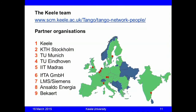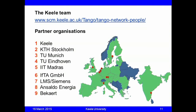On this map you can see where the partner organisations are located. Number one is Keele; two is KTH Stockholm; three is the Technical University of Munich; four is the Technical University of Eindhoven; and number five is IIT Madras in India. We have these five academic partners and four industrial partners: IFTA, a thermo-acoustics company specialising in monitoring and control in the Munich area; LMS, which has become part of Siemens, a software company in Belgium; Saldo Energia, a gas turbine producer in Genoa, Italy; and Beckert in Arnhem, Netherlands, a producer of domestic heating systems.